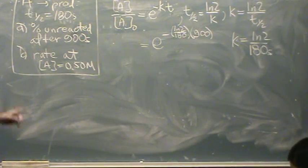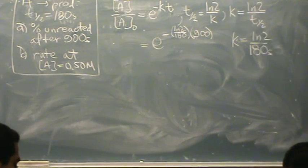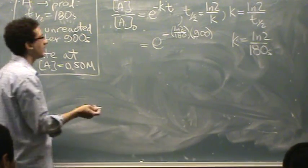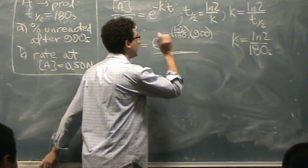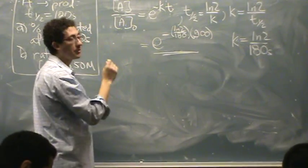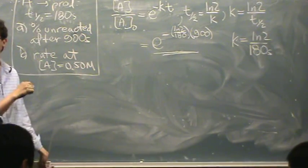900 is in seconds. The k will be in 1 over seconds, so the units will be great. And this is my answer, whatever that turns out to be. I need to multiply that number by 100 to change it to percent.